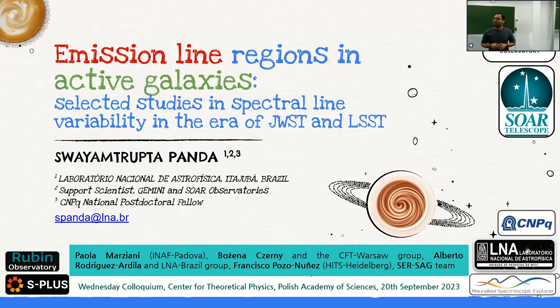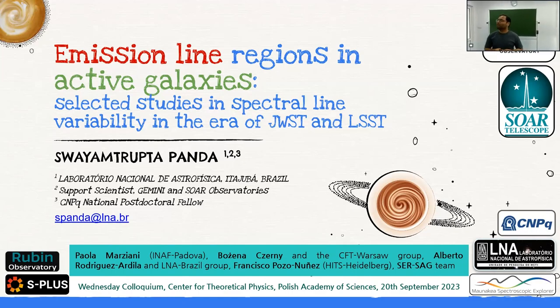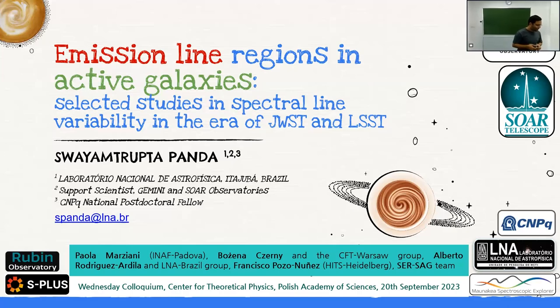Today I'm going to talk about emission line regions in active galaxies, focusing on selected studies and spectral line variability in the era of JWST and the Vera Rubin Observatory LSST. This work is a compilation of studies carried out in collaboration with Paula Marziani, Shana Cerny, and Francisco Pozo Nuñez from Heidelberg, among others, including the LSST AGN Science Collaboration group.